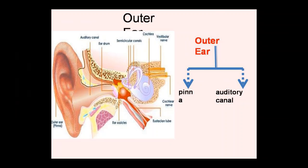The outer ear acts as a funnel to conduct air vibration through to the eardrum. It also has the function of sound localization. Sound localization for sounds approaching from the left or right is determined in two ways: firstly, the sound wave reaches the closer ear slightly earlier; secondly, the sound is less intense at the second ear because the head acts as a sound barrier, partially disrupting the spreading of sound waves. All these cues are integrated by the brain to determine the location of the source of sound. It is therefore difficult to localize sound with only one ear.